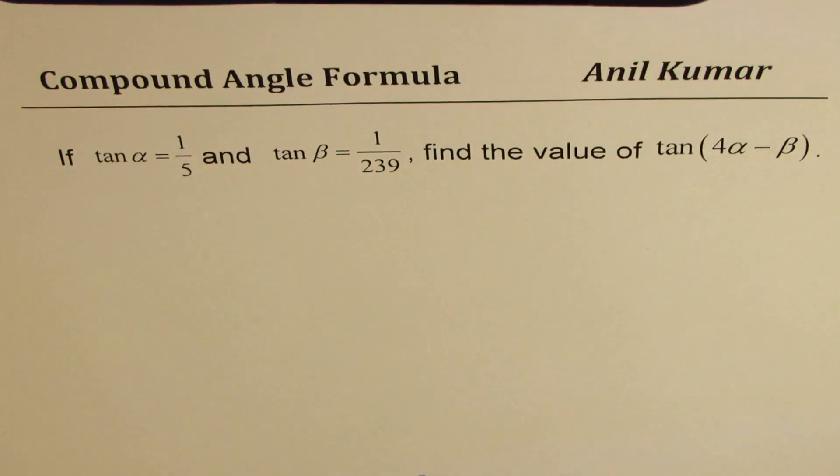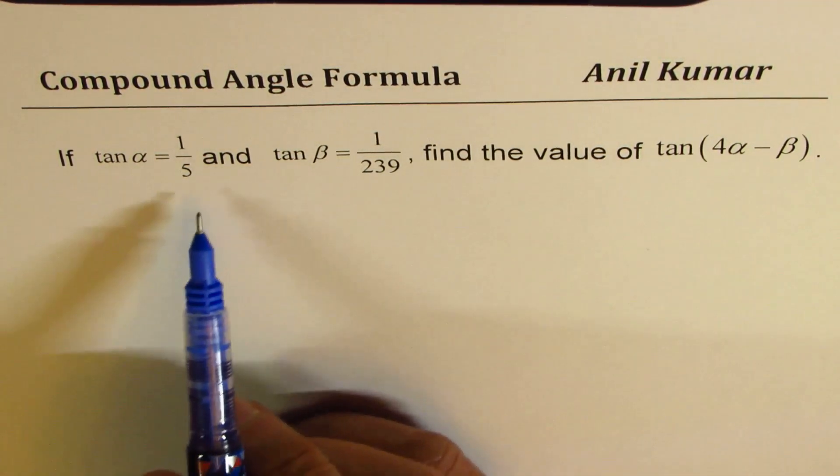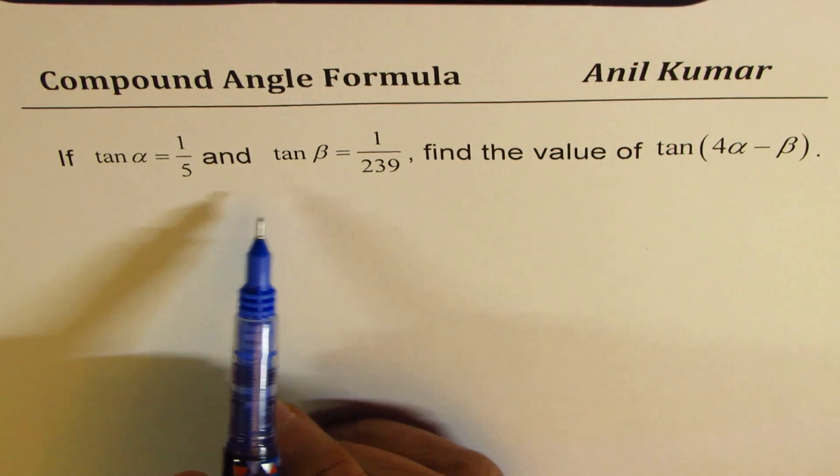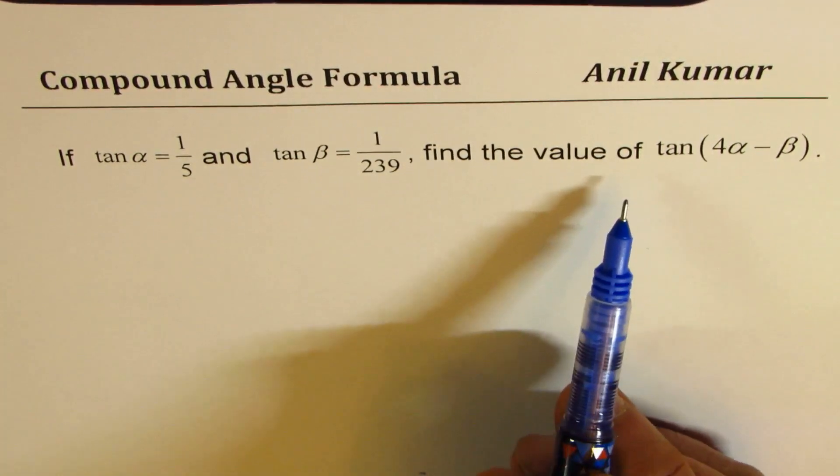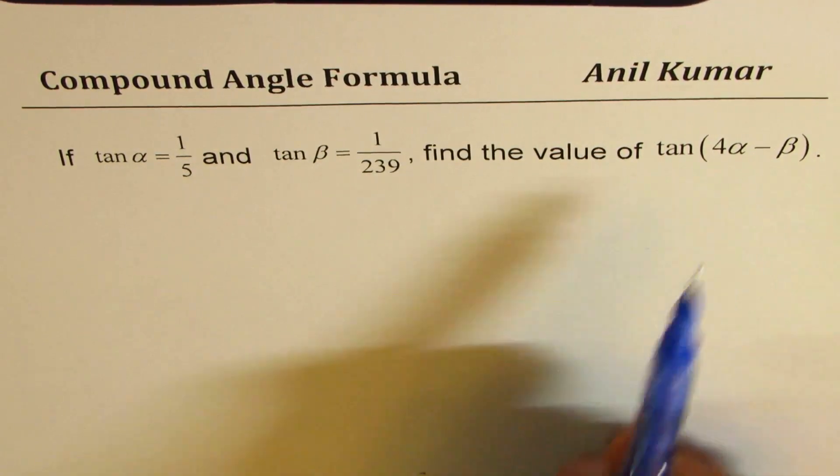I'm Anil Kumar sharing with you an excellent question on compound angle formula. If tan alpha equals 1 over 5 and tan beta equals 1 over 239, find the value of tan 4 alpha minus beta.